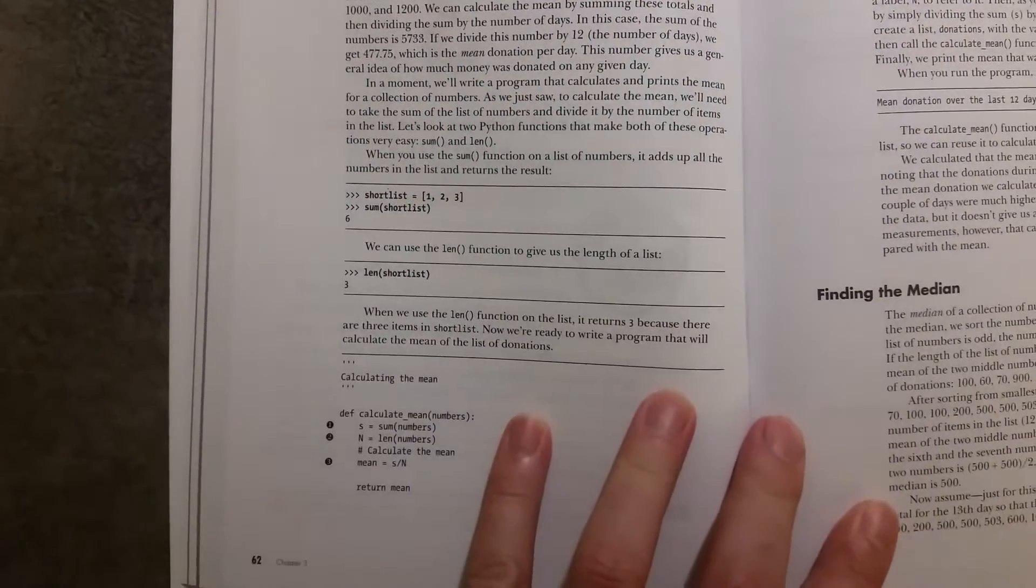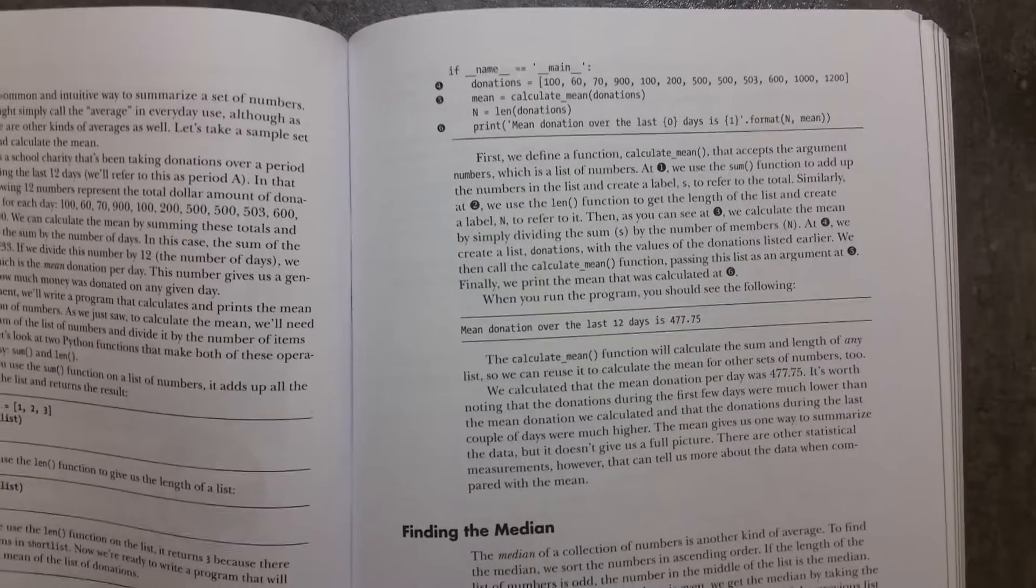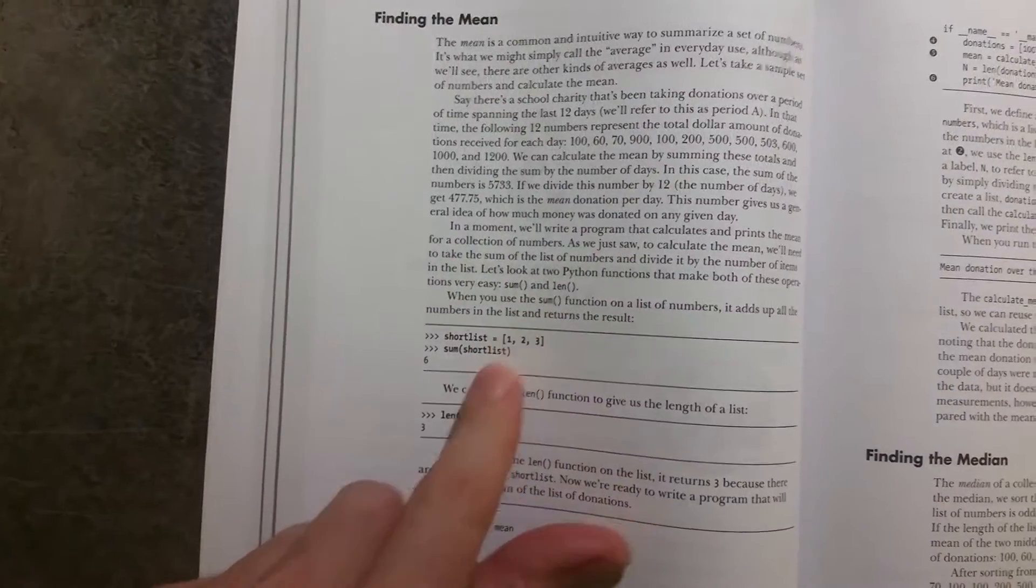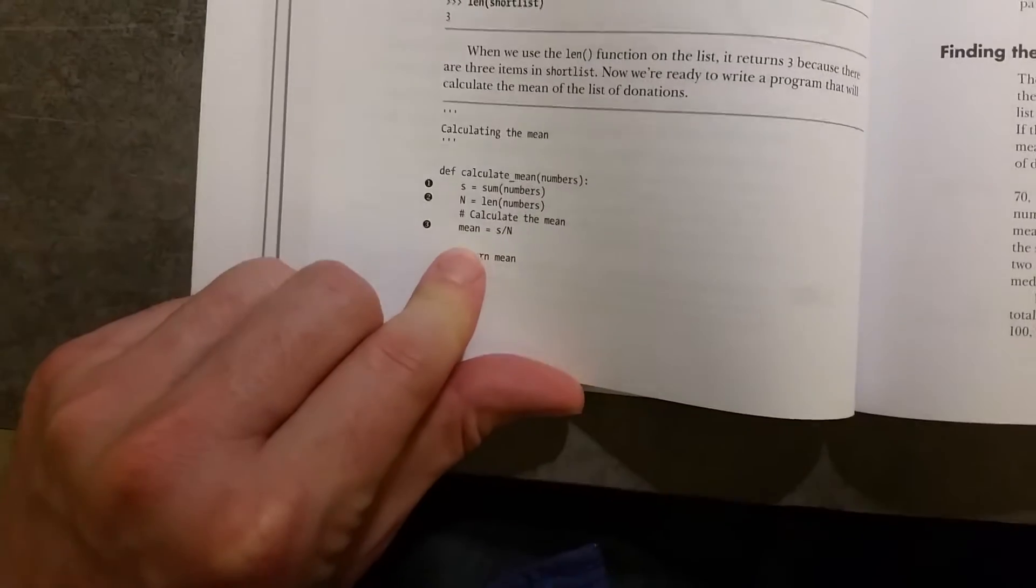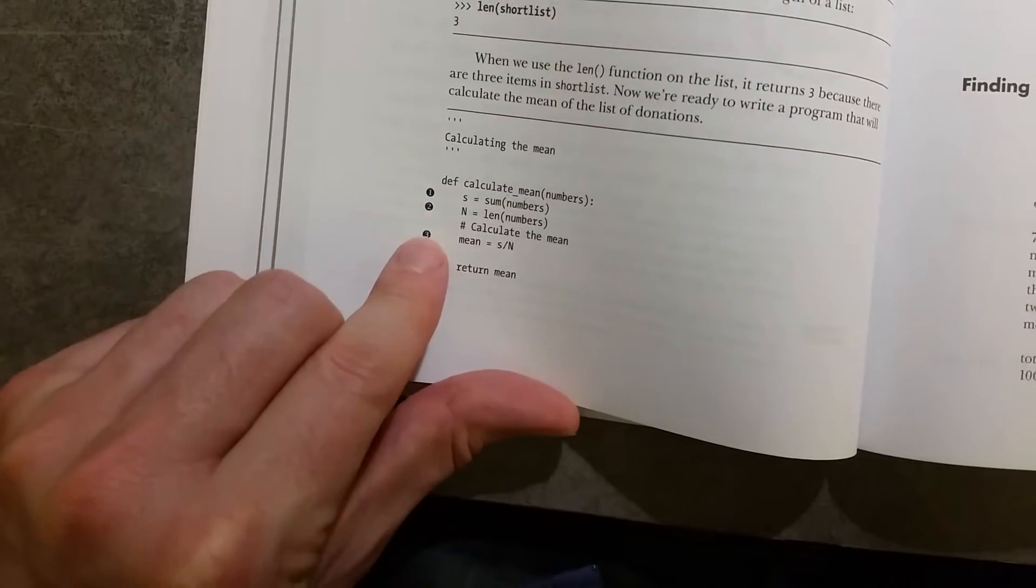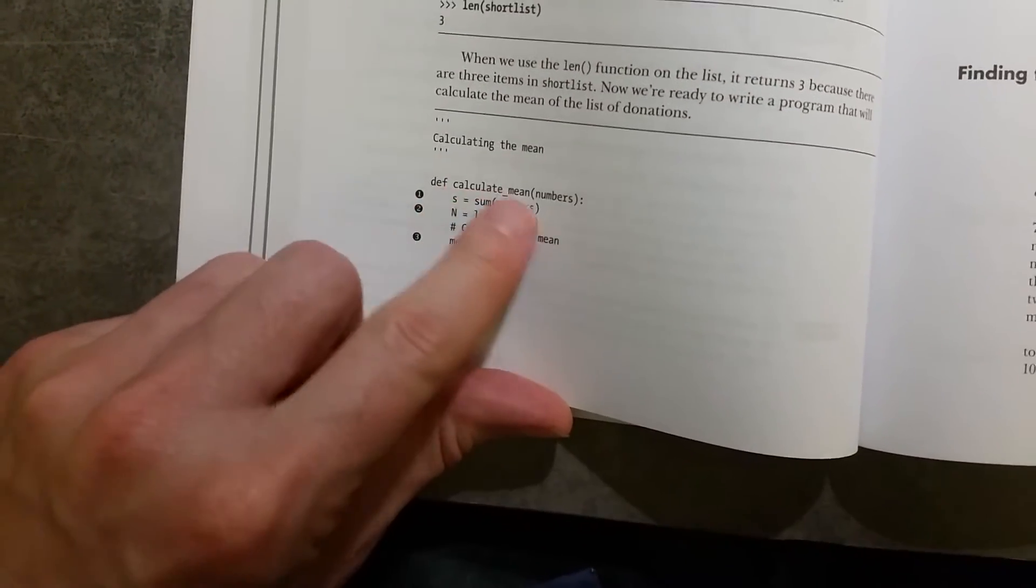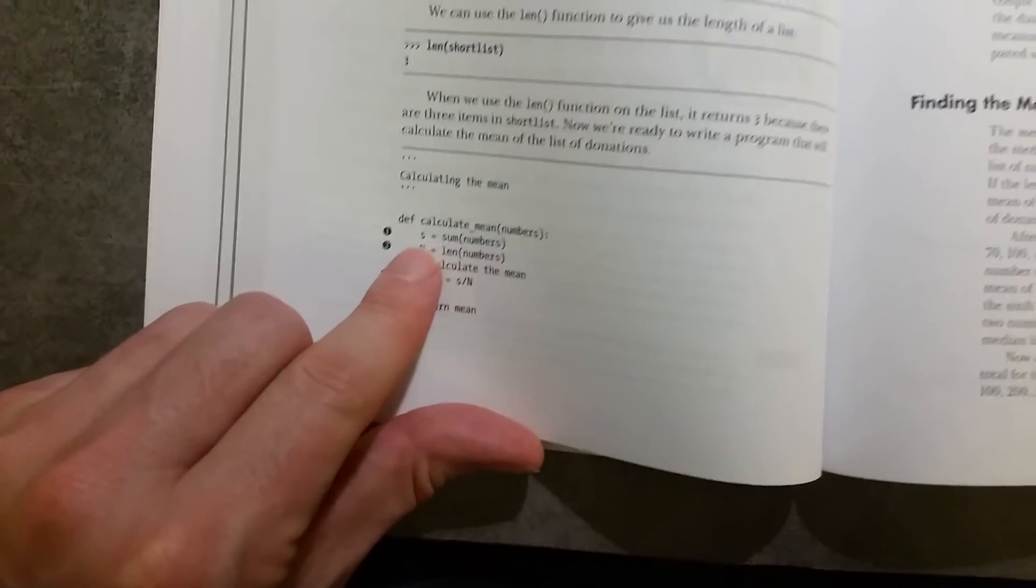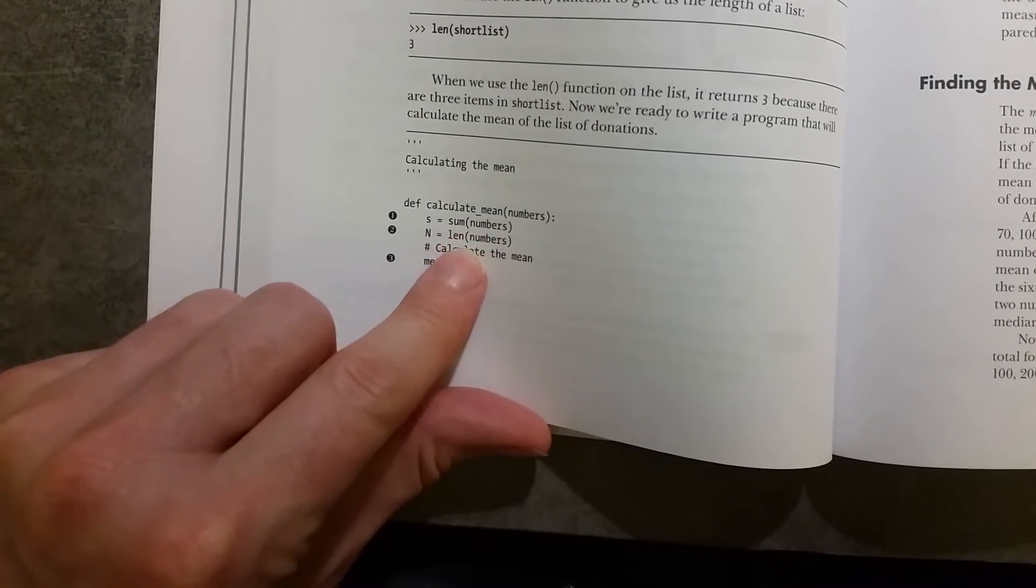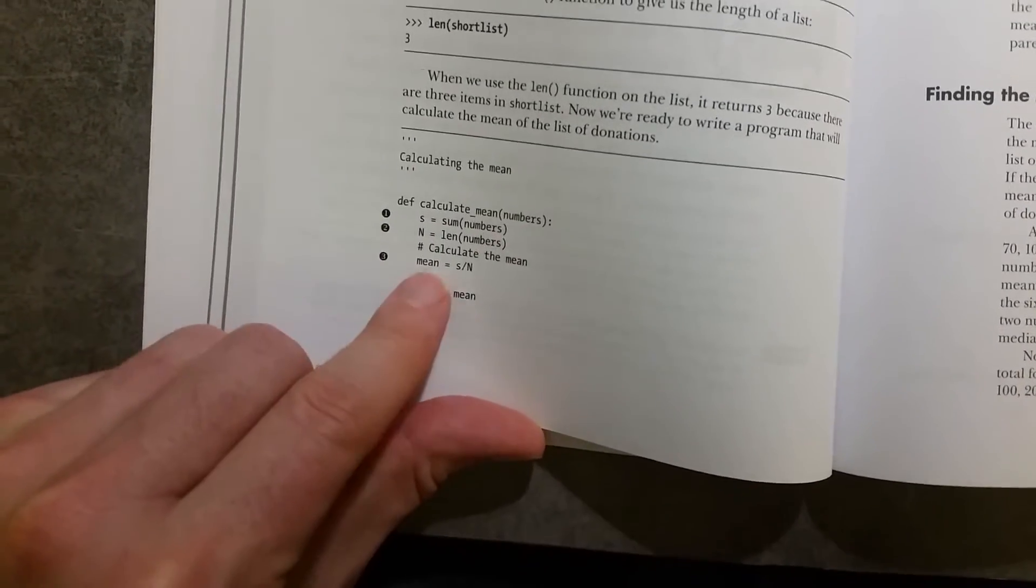We have this very familiar layout that we have with the no starch press books, where it takes you through, it explains how you're going to do something, it introduces the code, and then it dissects the code here with these points. So when we're calculating the mean here, we have a variable for the sum and the length, and that's how we calculate the mean by dividing those two.